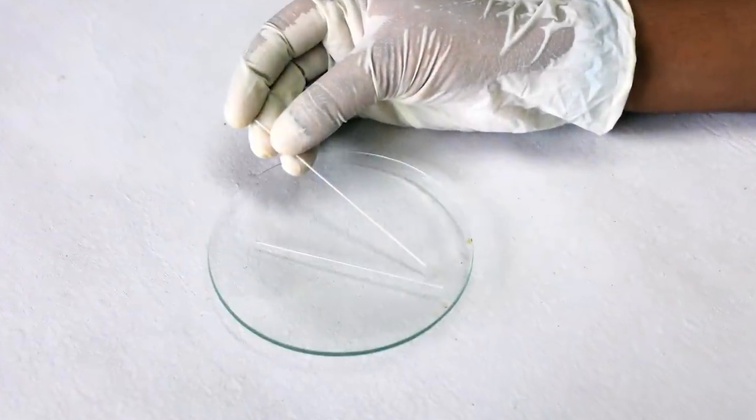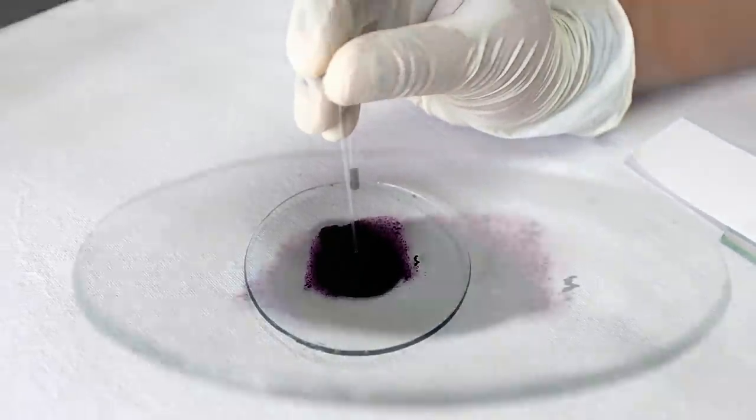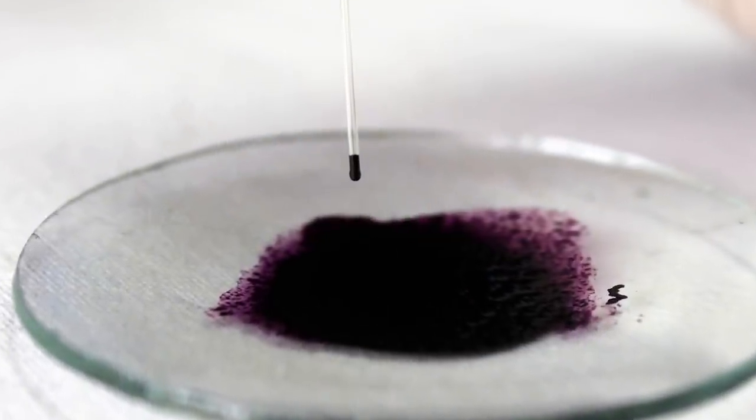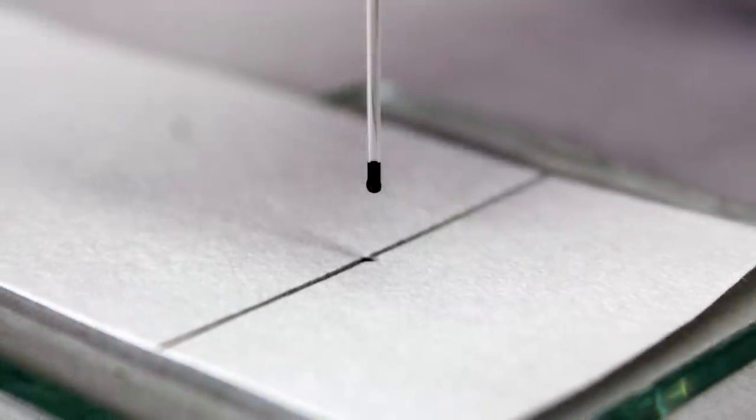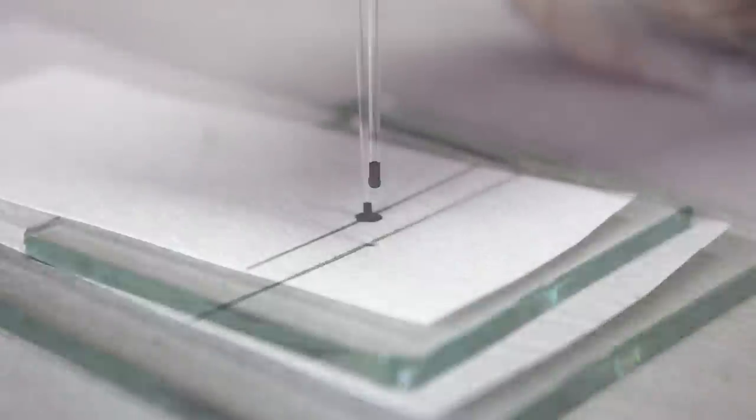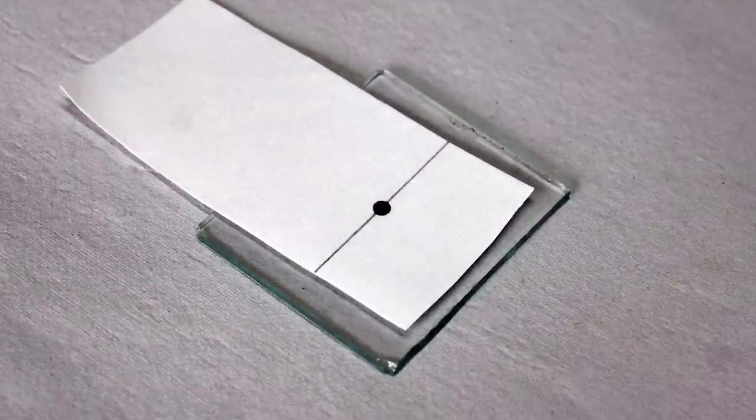Now, take a capillary tube and dip it into the beaker containing a mixture of red and blue inks. Using the capillary tube, put a drop of the mixture of red and blue inks at the central point of the line. Allow it to dry in open air.